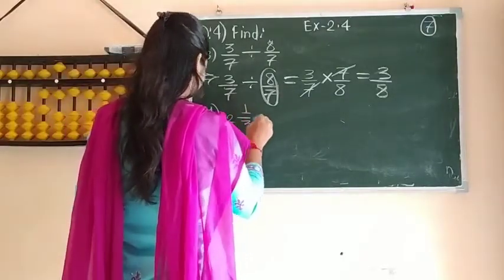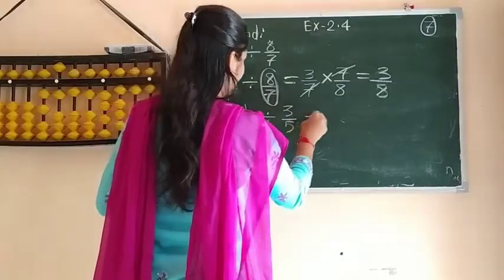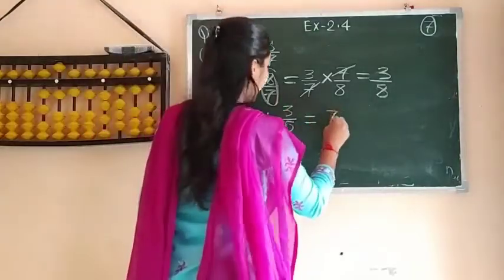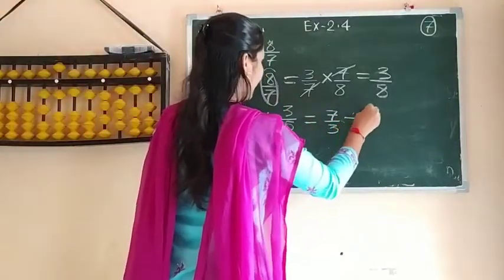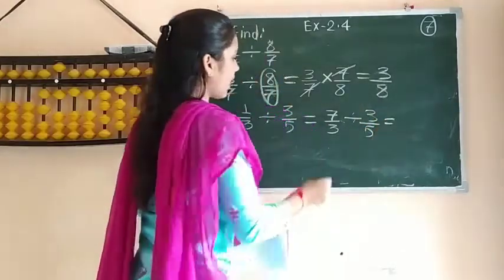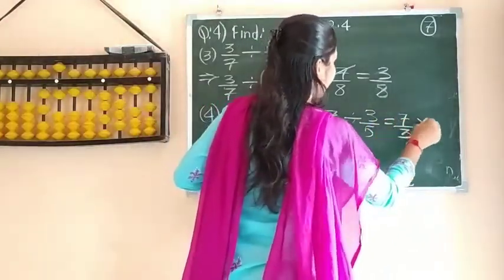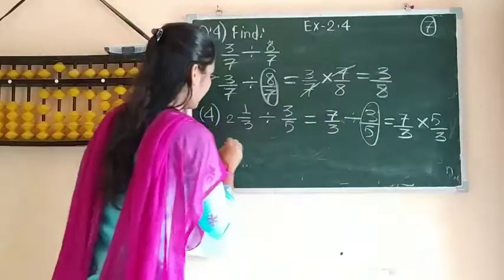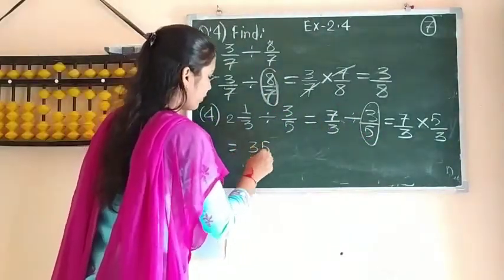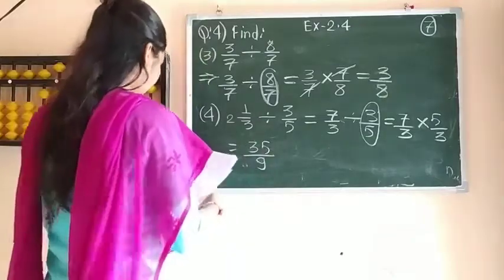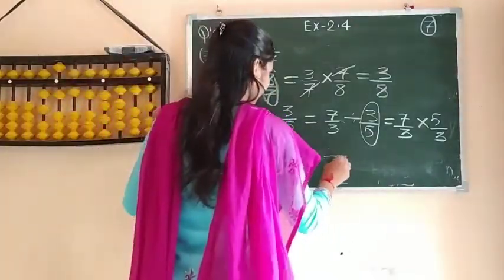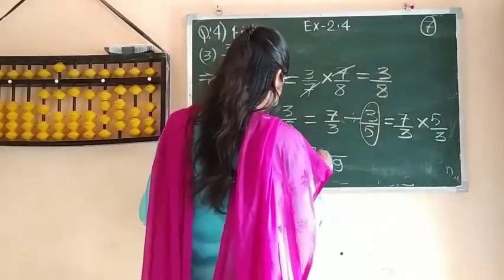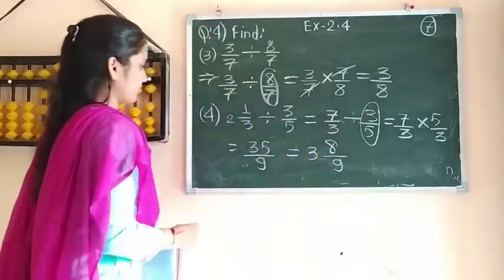Next: 2 and 1 by 3 divided by 3 upon 5. First, convert the mixed fraction to an improper fraction: 3 times 2 is 6, plus 1 is 7, giving 7 upon 3. Now replace the division sign with multiplication and make the reciprocal of 3 upon 5, which is 5 by 3. Multiplying gives 35 upon 9. You can also write this as a mixed fraction: 3 nines are 27, plus 8 is 35, so it is 3 and 8 by 9.